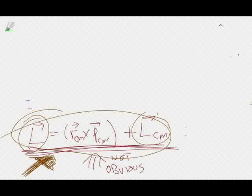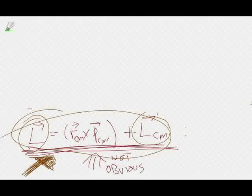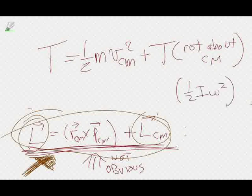For a rigid body, kinetic energy T equals (1/2) m v_cm squared plus T-rotational about the center of mass, which we might write as (1/2) I omega squared. But that only works in the special case where all products of inertia are zero except I_zz, and omega is around z. These two expressions — L and T — look very similar but do not immediately follow from each other; they both depend on mass and velocity differently.